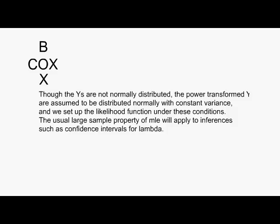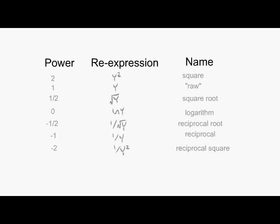Lambda can be any number, though in practice we entertain values that are on the ladder of powers. Selecting one of these powers makes the job of explaining the relationship between y and x's easier. Using BC like this as a guide to selecting lambda is the way BoxCox recommended.